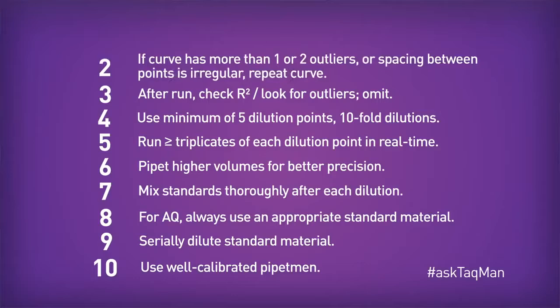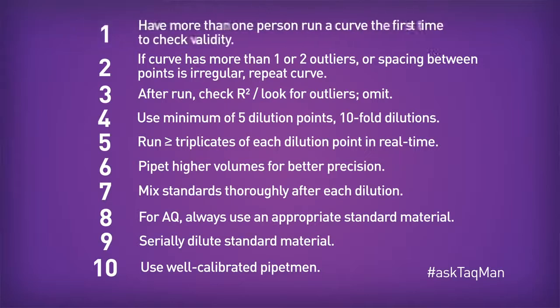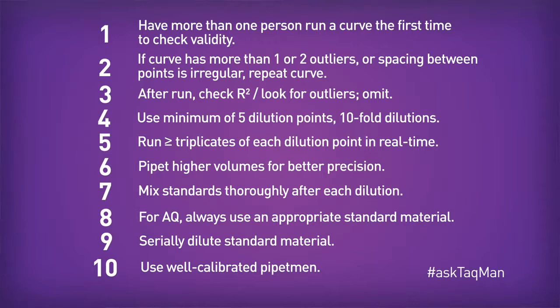Number 2: if the curve has more than one or two outliers, or if the spacing between any of your points is irregular, repeat the entire curve, including doing the dilution. And number 1: have more than one person run a curve the first time to make sure that the results are in agreement.